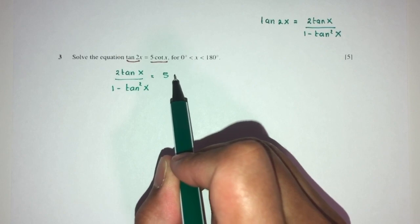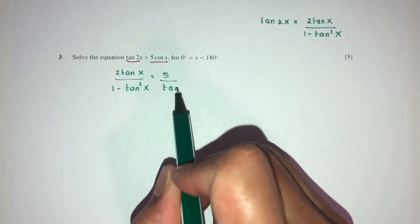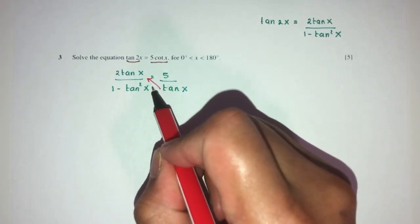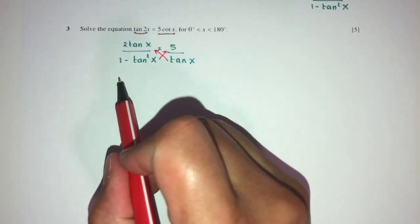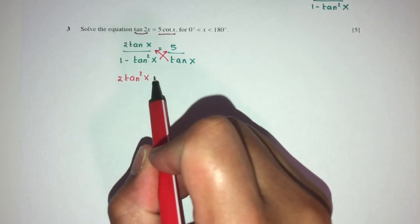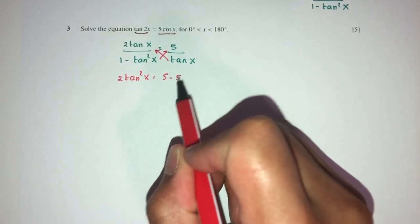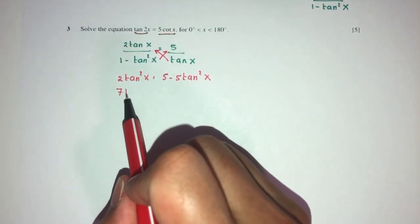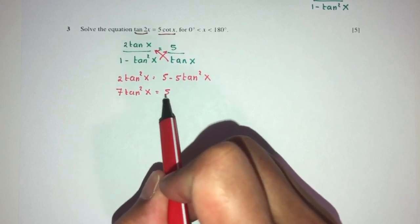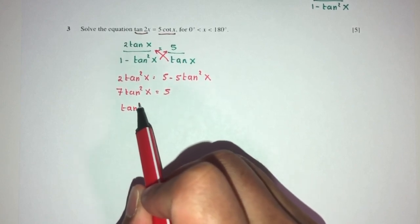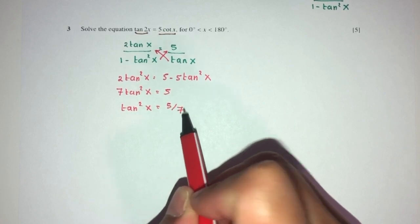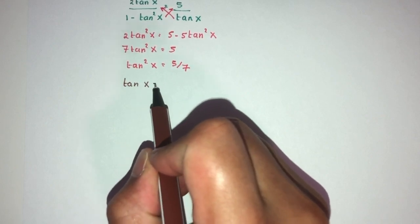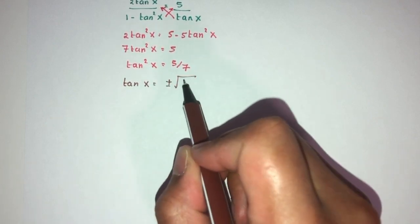We cross-multiply: 2tan²x = 5 − 5tan²x. Sending all tan terms to one side gives us 7tan²x = 5, so tan²x = 5/7. When we apply the square root, we get tan(x) = ±√(5/7).